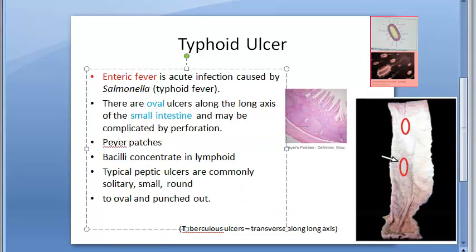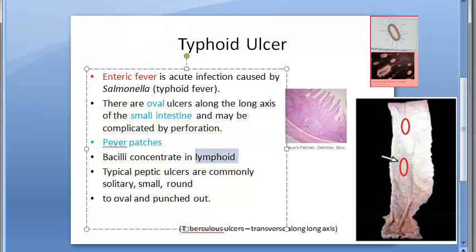Just focus on all the key points. Peyer's patch, small intestine — these are very important words. Lymphoid. The bacilli concentrate in these lymphoid parts.